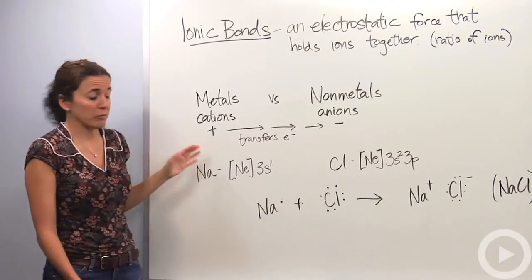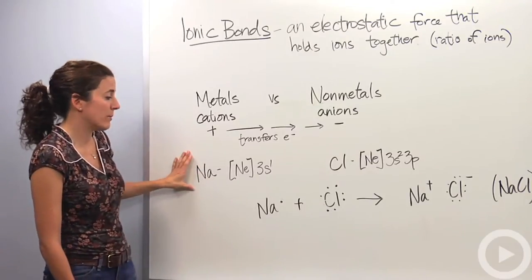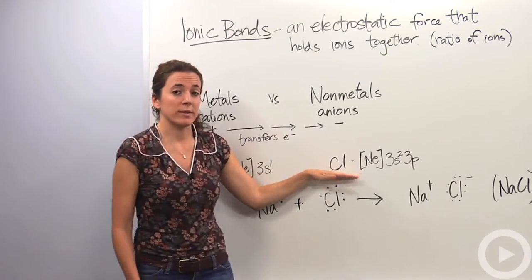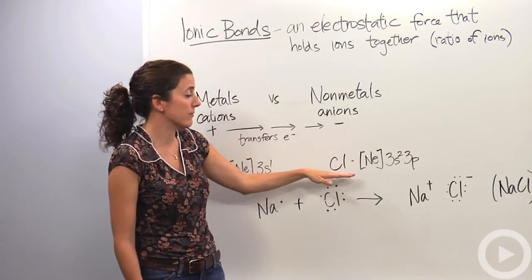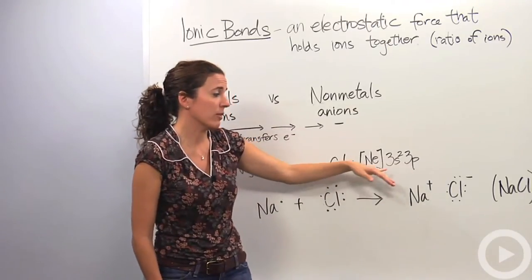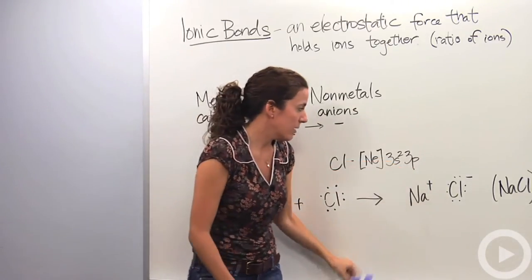All right, so let's take one for example. Let's do sodium. We know sodium has the electron configuration of Neon 3s1. And you know it comes with chlorine. This is typical table salt, the one you put on your dinner to flavor your food. So chlorine has the electron configuration of Neon 3s2, 3p5.